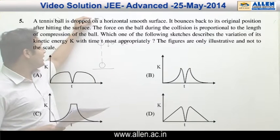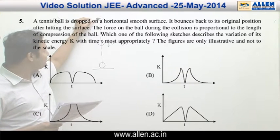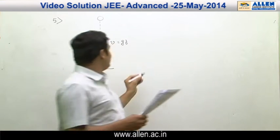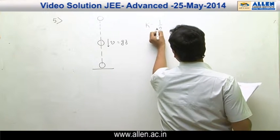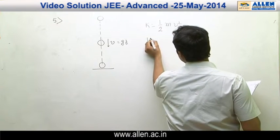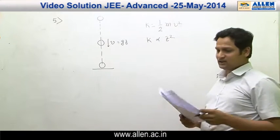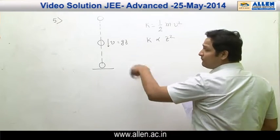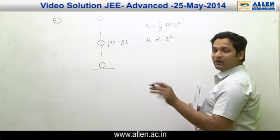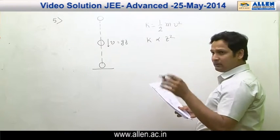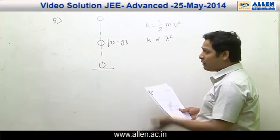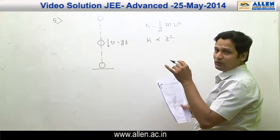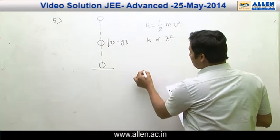Question number 5: a tennis ball is dropped from some height h. As the ball comes down, its velocity becomes v equals gt. Since kinetic energy K equals half mv squared, K is proportional to t squared, so the graph will be an upward parabola. During compression the velocity becomes zero, then when it bounces back it regains velocity, and as it goes up its velocity decreases to zero again. Hence the answer is option B.